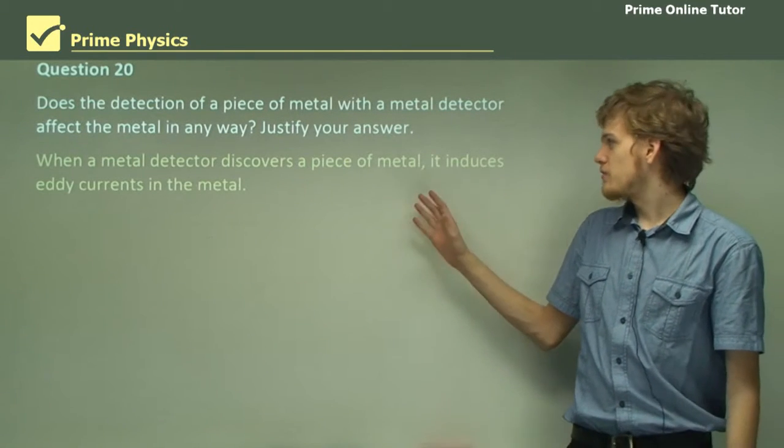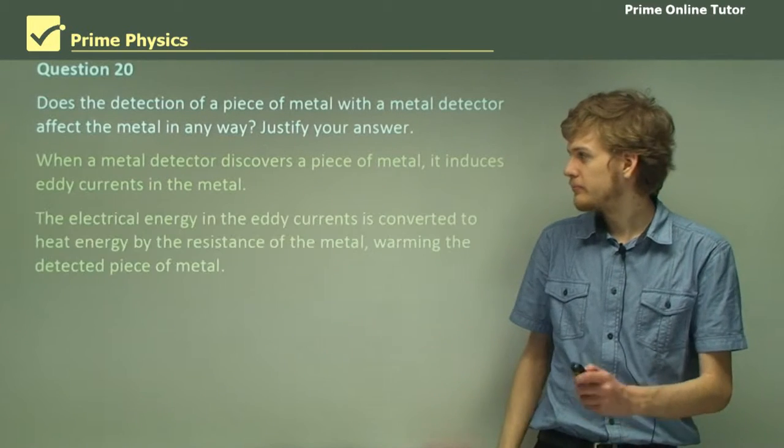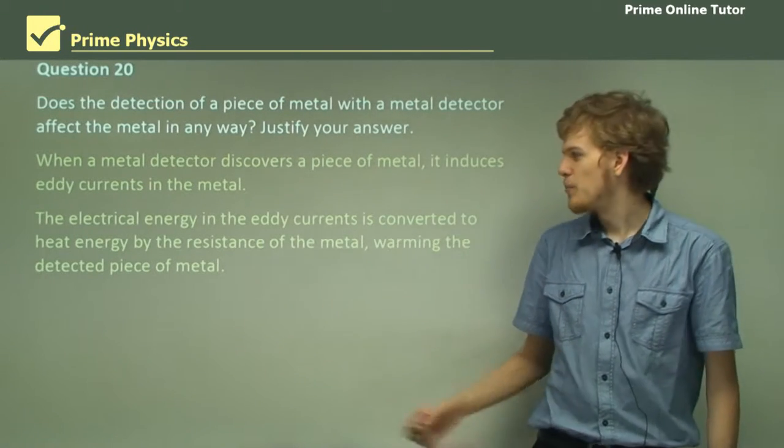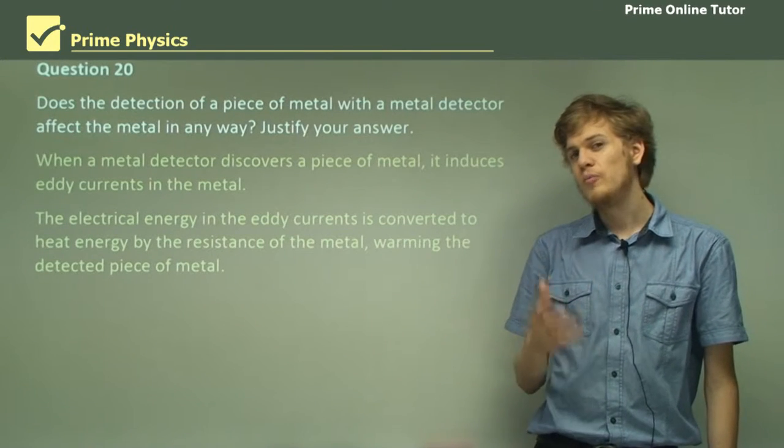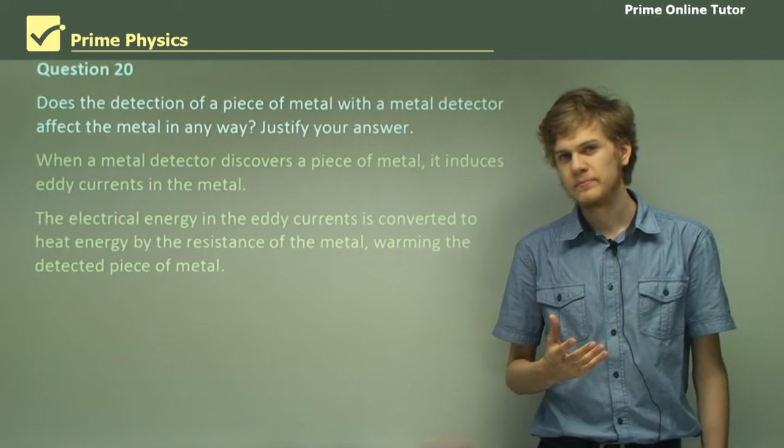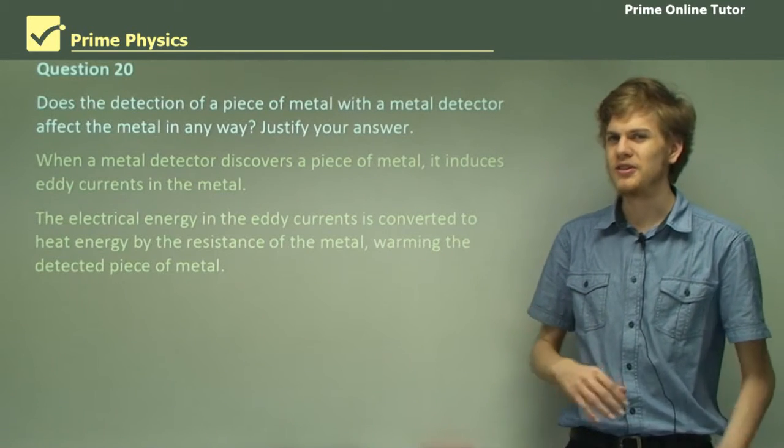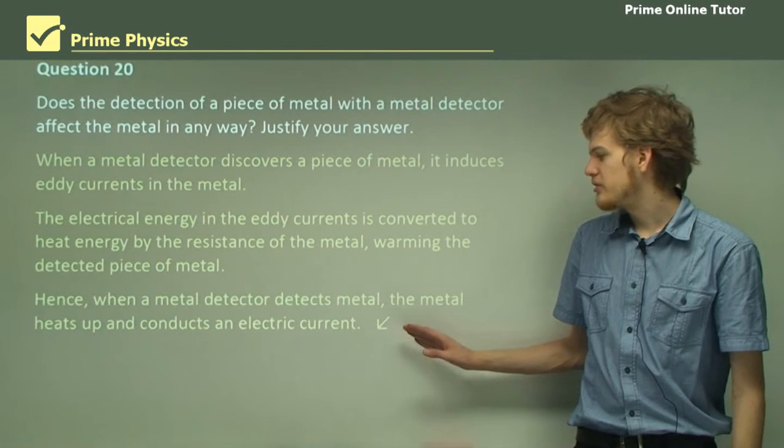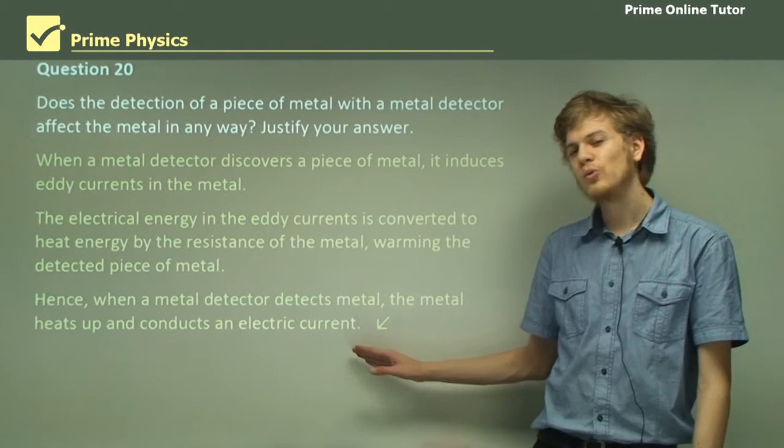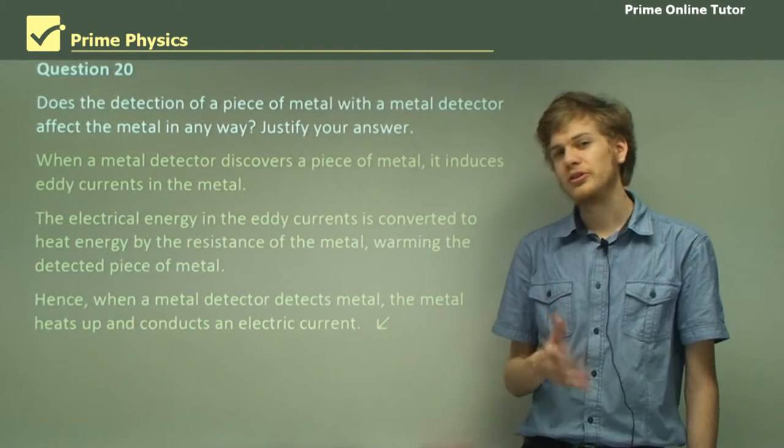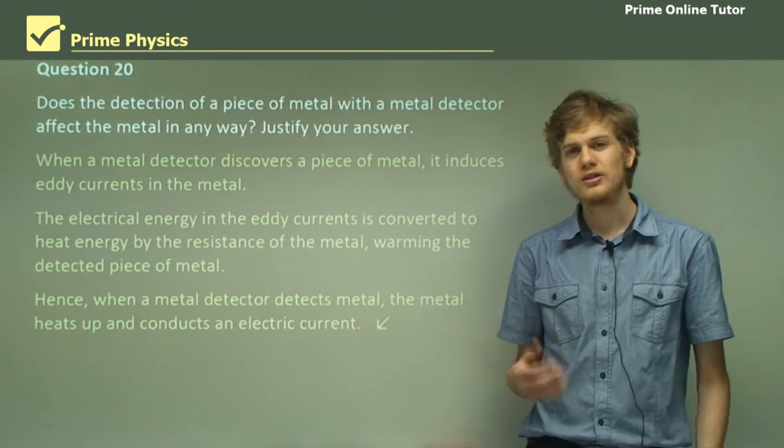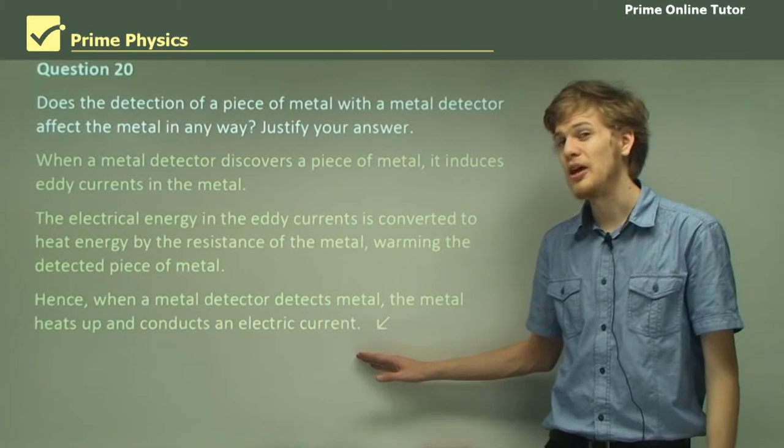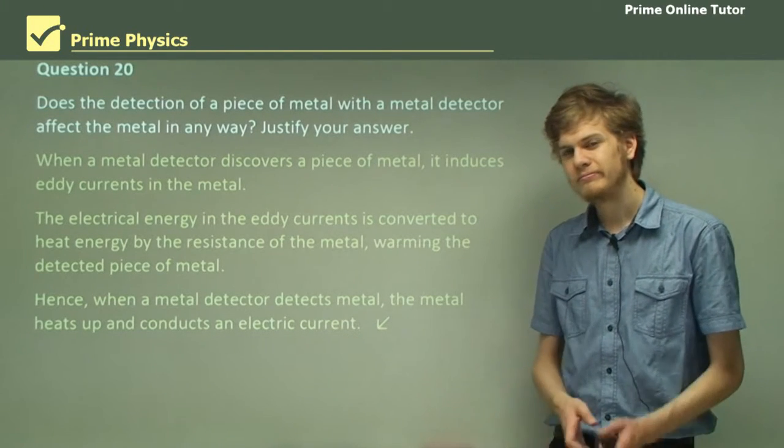When a metal detector discovers a piece of metal and induces eddy currents in the metal, the electrical energy in the eddy currents is converted into heat energy by the resistance of the metal. Remember that no metal has no resistance, unless you get into superconductors, but that's a different topic. When a metal detector detects metal, the metal will heat up and conduct an electric current. If what you're detecting is a very sensitive electronic part, this may cause damage to it.